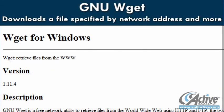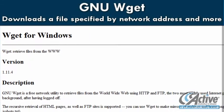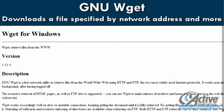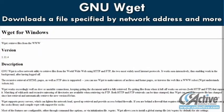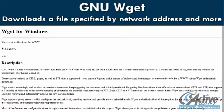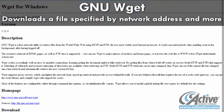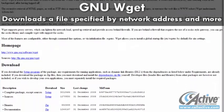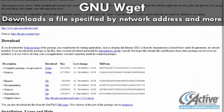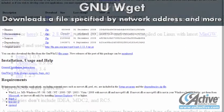If there is a file that needs to be downloaded via command line or on a regular basis using a batch file, WGET is a simple way to get that done. At a minimum, specify the file's URL, address, or path, and WGET simply downloads the file and exits.